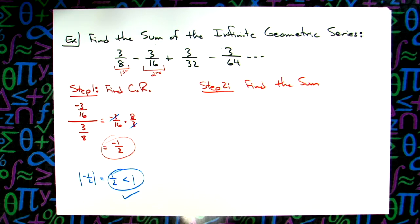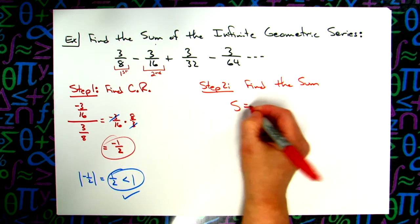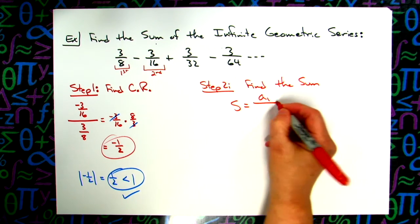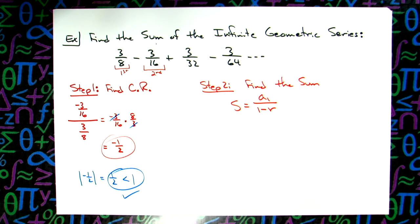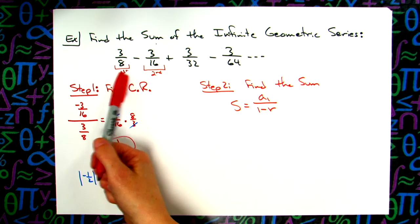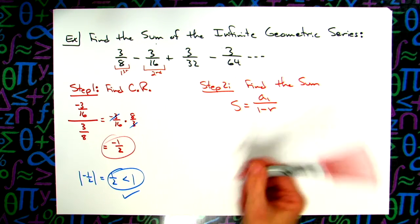And for this sum, it's S equals A sub 1 over 1 minus R. A sub 1, first term, is 3/8ths. So 3/8ths is going to go into the numerator.